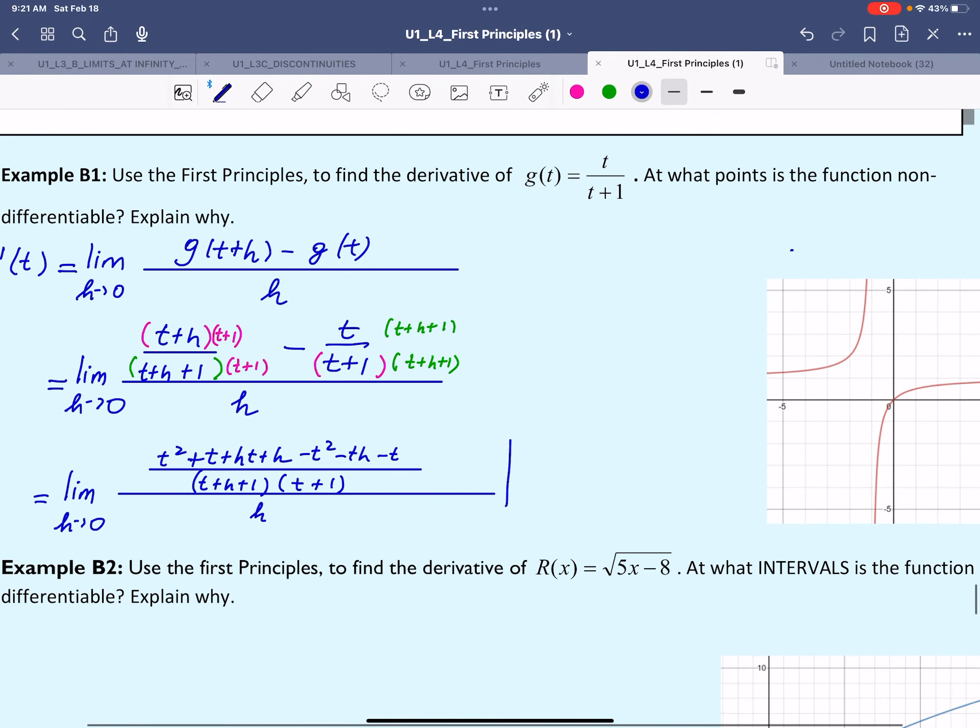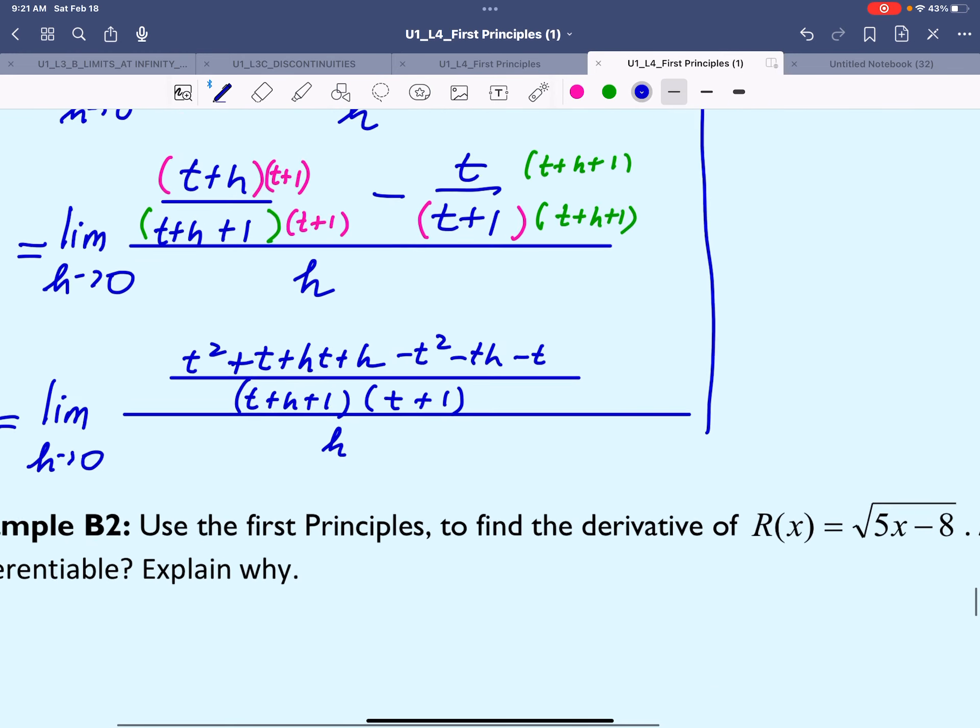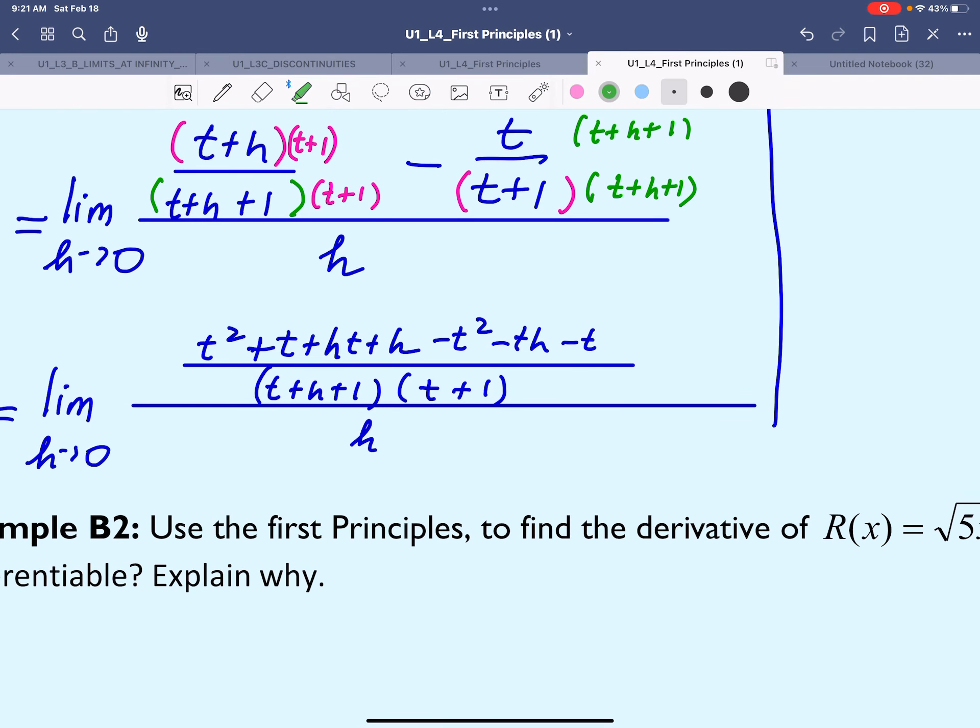Let's continue with the next step. Limit as h approaches 0. This is the fun step. t² and t² simplifies to 0. Plus t minus t simplifies to 0. And as you can see, we ended up with all terms that have an h in it.